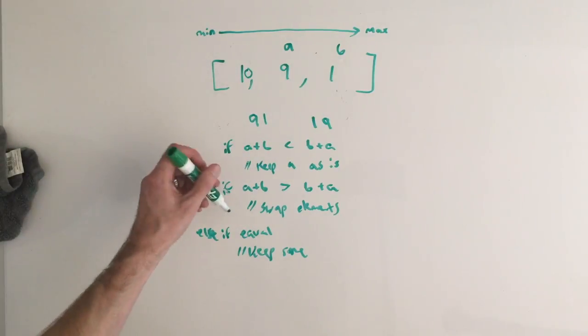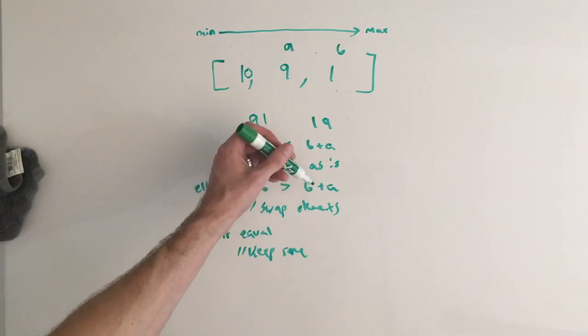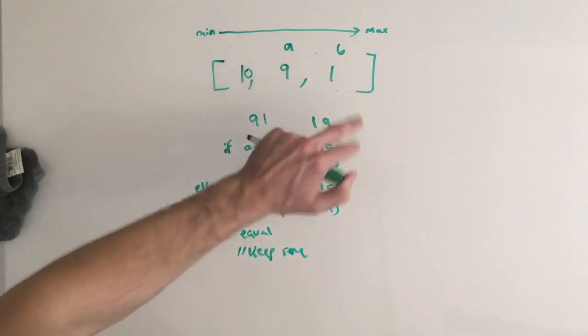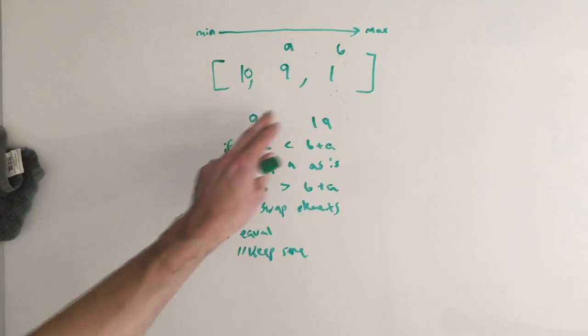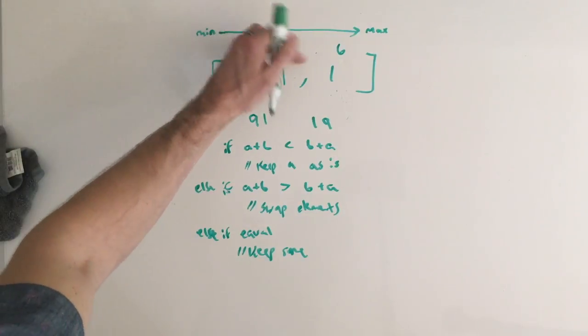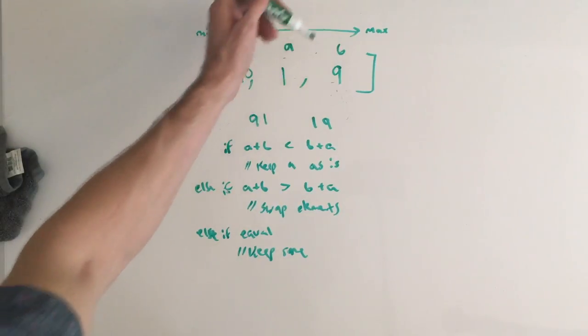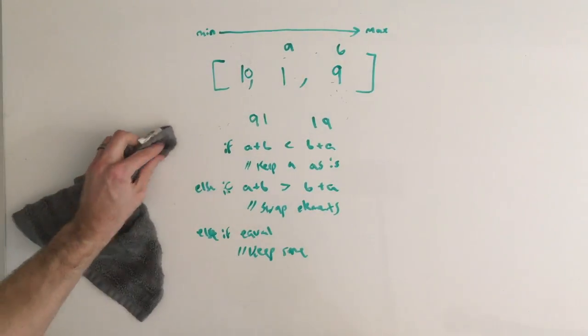Is 9 plus 1 concatenated together less than 1 and 9? It's not. It's actually this case we're going to hit, which is 91 is greater than 19. So we need to swap these numbers because it makes more sense to have the 1 concatenated with the 9 versus the 9 concatenated with the 1. So we switch this to a 1, switch this to a 9. And at this point, we have finished sorting the array.